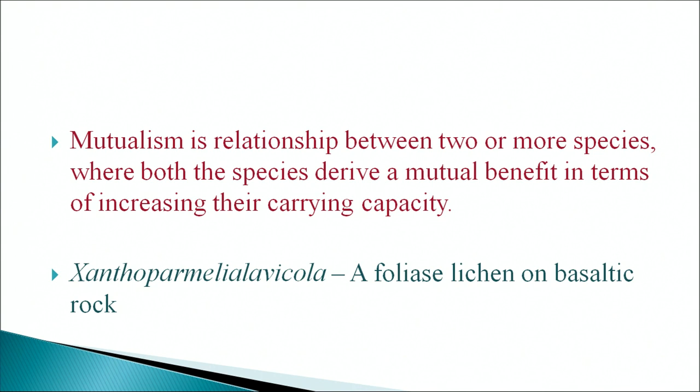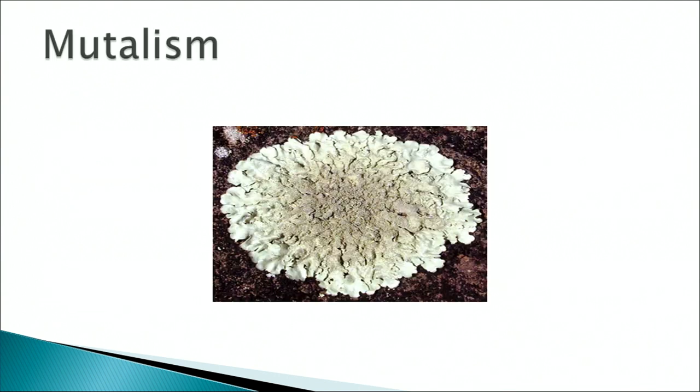Commensalism example: a remora and its host. The shark (zebra shark) and sucker fish — sharks are larger, and the sucker fish attaches itself to the shark and feeds on its leftover food. The sucker is an adaptation of the remora. Mutualism is a relationship between two or more species where both derive mutual benefit in terms of increasing their carrying capacity. A good example of this is lichen. Thank you, ma'am.